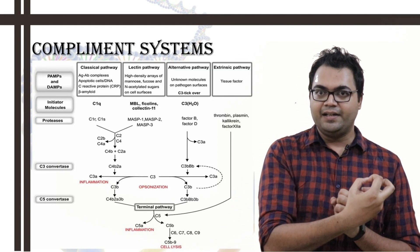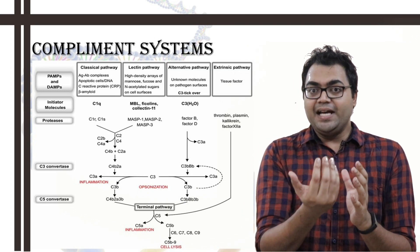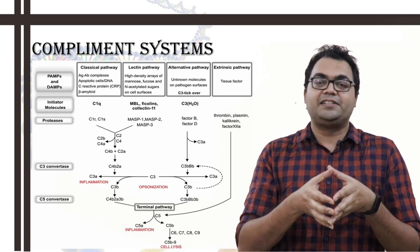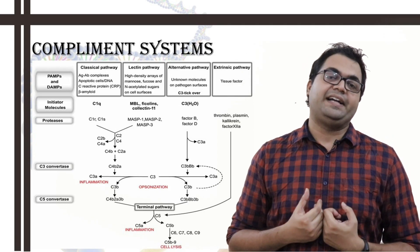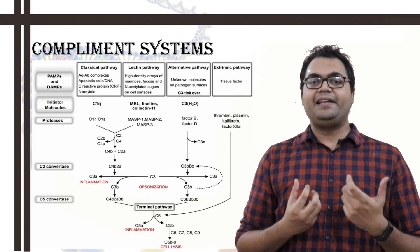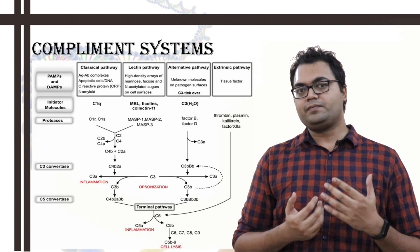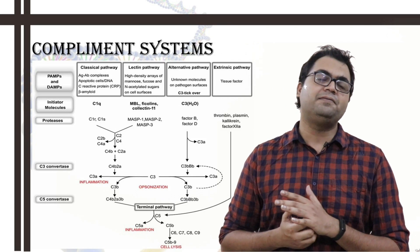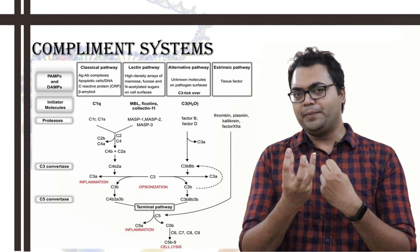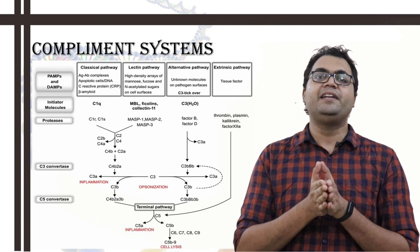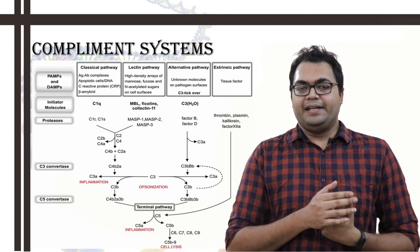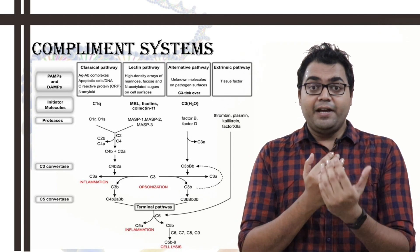Also, the mannose-binding lectin pathway. Lectins are the carbohydrate binding proteins. The MBL pathway and alternative pathway, they belong to the innate immunity because they do not need an antigen-antibody complex in order to cause the reaction or in order to initiate the complement response. Now, mannose-binding protein or mannose-binding lectin is also secreted by the liver. It belongs to the subclass of, you can say, collectins. Now, collectin-10 and collectin-11 have also been found to bind to the carbohydrate domain, the N-glycan, specific N-acetyl-glucosamine, fucoses, mannose is present in the cell wall of the microorganisms.